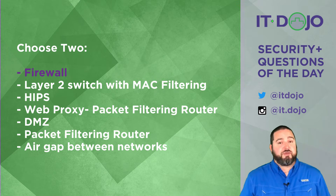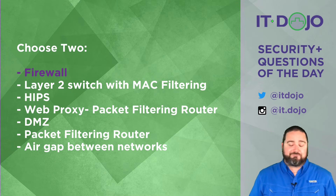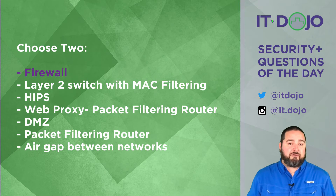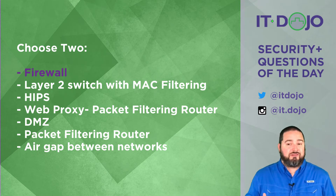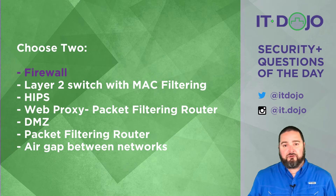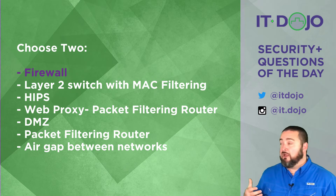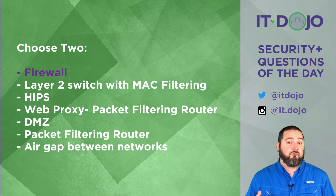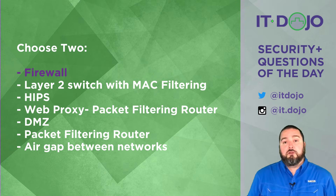Choice number two says to use a layer two switch with MAC filtering — that's not going to accomplish your objective. MAC filtering on a plain Ethernet switch only gives you rudimentary control over which devices are allowed to connect to which switch ports. It won't accomplish your segmentation objectives, nor will it handle the conditional bi-directional flow of data that you need.